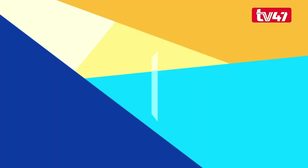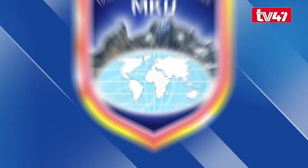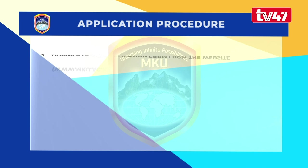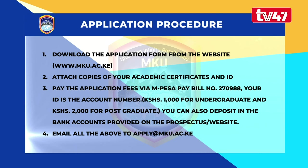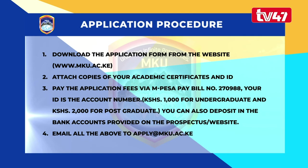These televised lectures supplement our robust online learning on the MKU online platform. You can view more televised lectures via our online platform. Mount Kenya University is in a digital era. To complete your online application: download the application form from www.mku.ac.ke, attach copies of your academic certificates and ID, pay the application fees via M-PESA pay bill number 270988 — your ID is the account number, 2,000 shillings for postgraduate — or deposit in the bank accounts provided on the website. Then email all the above to apply@mku.ac.ke.